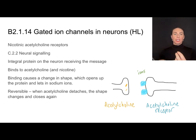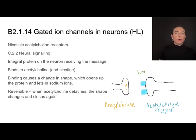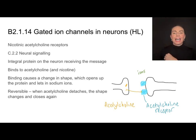When thinking about how this plays out in transmission between two nerves, let's take a closer look at something called a nicotinic acetylcholine receptor. This receptor is a protein — it's an integral protein on the neuron that is going to be receiving a message. The message comes in the form of a neurotransmitter called acetylcholine. Acetylcholine diffuses out of the neuron that is sending the message and attaches to and binds to that acetylcholine receptor.